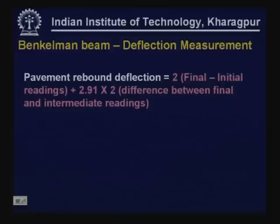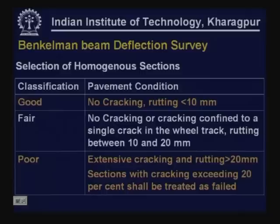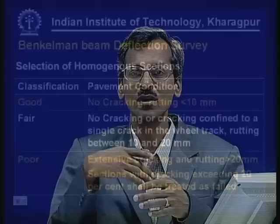If the difference is less than 0.025 mm, pavement rebound deflection equals twice (final minus initial interval reading). For a survey covering say 100 kilometers, the complete stretch must be divided into smaller stretches of uniform characteristics — perhaps 1 or 2 kilometer sections — having uniform materials, traffic pattern, subgrade condition, and especially uniform distress condition on the pavement surface. Each pavement stretch is handled differently based on visual examination and physical measurements.